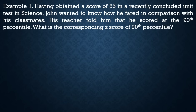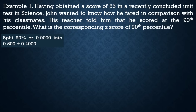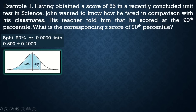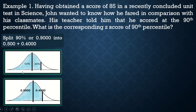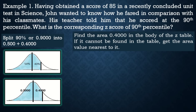First, split 90 percent (0.900) into two parts: 0.5 and 0.4. The 0.5 represents half of the normal curve, and 0.4 is the remaining portion. Combined, that gives us 0.9 or 90 percent. Now we need to find 0.4 in the z-table.